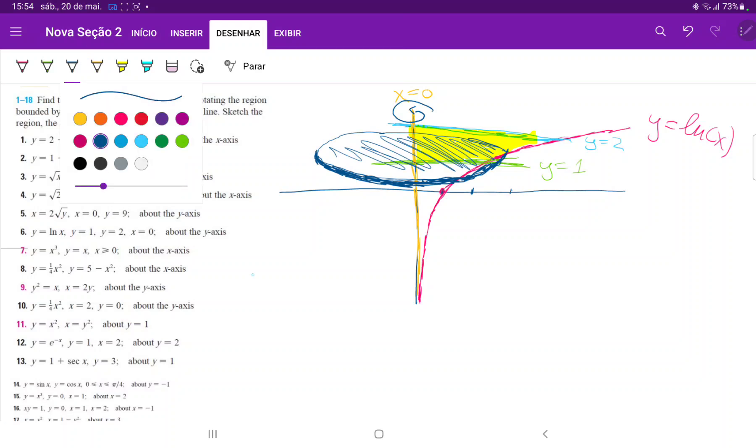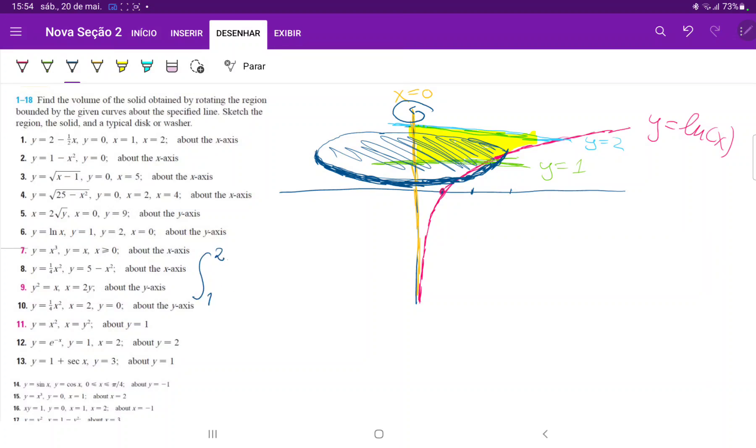So to set up our integral, we know that we're integrating from 1 to 2 because that's where our boundaries are. It's the integral from 1 to 2 of our area. Now let's talk about what our area is. So our area is equal to π times r squared.